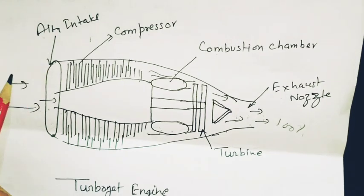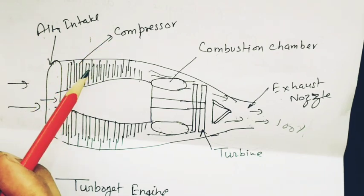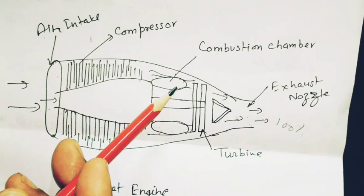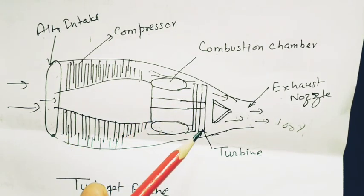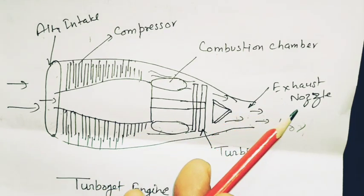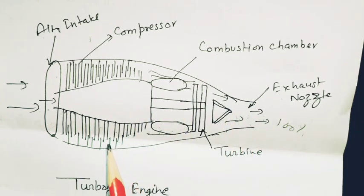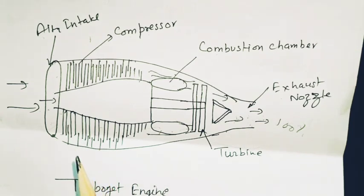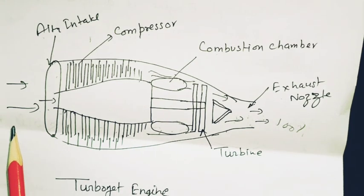Now we can see the major components of this engine: air intake, from where air is entering; next, compressor, where air is being compressed; then combustion chamber, where air is given ignition and fuel; and then turbine, which drives compressor and related accessories; and then last is exhaust nozzle. So these are the major assemblies and sub-assemblies of this engine. Now come to operation.